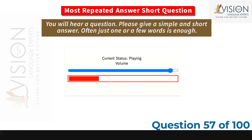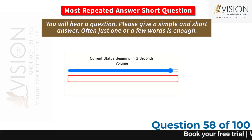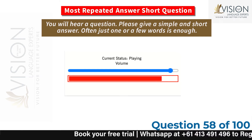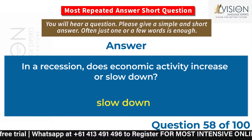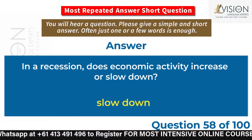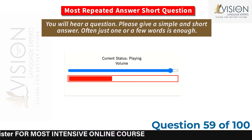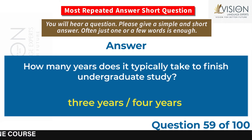In medical terms, are antibodies harmful or beneficial for patients? Beneficial. In a recession, does economic activity increase or slow down? Slow down. How many years does it typically take to finish undergraduate study? Three years, four years.